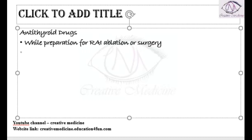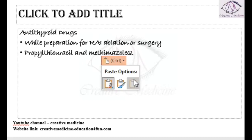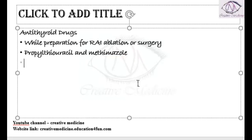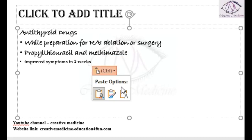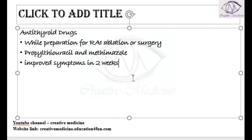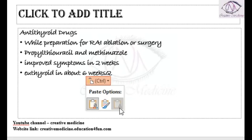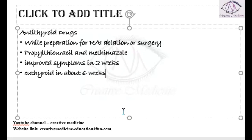Antithyroid drugs used in Graves disease are mainly propylthiouracil and methimazole. Once you start the patient on antithyroid drugs, the patient's symptoms are improved in 2 weeks and the patient becomes euthyroid in around 6 weeks.